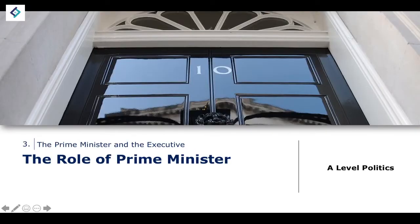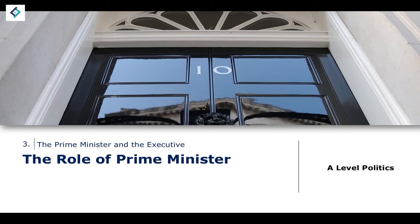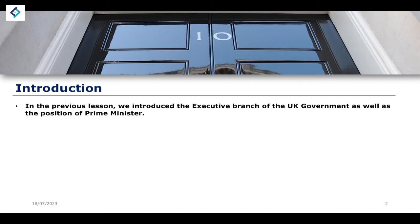In the previous lesson we introduced the subject of the executive branch of government. We talked about the relationship the executive branch has with parliament, who forms the executive branch, and the relationship between the prime minister and the other ministers of state. In this lesson, we're going to focus our attention on arguably the most important figure within the executive branch — the prime minister. We'll talk about the role of the prime minister, and in future lessons we'll talk about the powers the prime minister has, as well as theories of executive power.